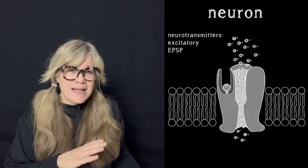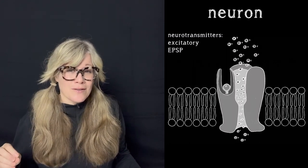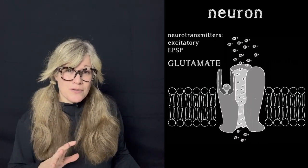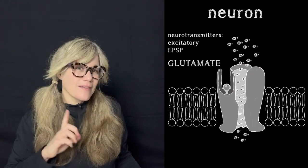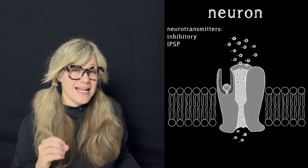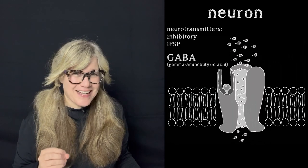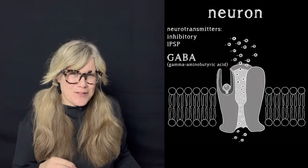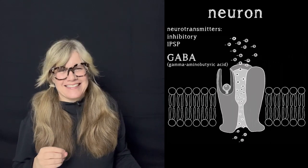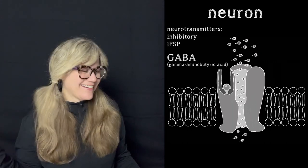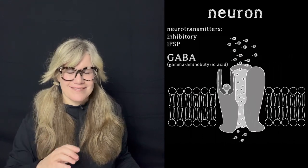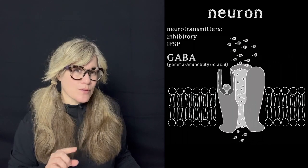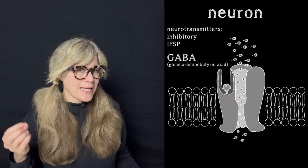The most abundant excitatory neurotransmitter is glutamate — it almost always produces excitatory potentials, or EPSPs. The main inhibitory neurotransmitter is gamma-aminobutyric acid, also known as GABA. GABA always produces inhibitory potentials, or IPSPs. We'll look at these and other neurotransmitters in a few minutes.